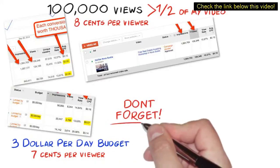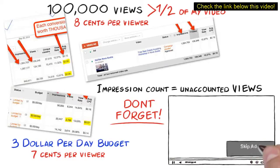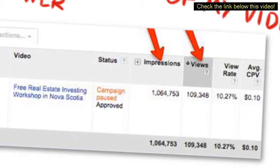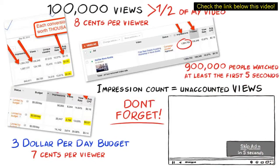Now, let's not forget that impression count is also very important, as these are unaccounted views — views for the first five seconds where the user can skip, or a little less than half of the video before they can skip the ad. These are forced views which are unaccounted. As you can see from this screenshot, it has over 100,000 paid views. But take a look at this: we have over 1 million impressions and over 100,000 views, which means 900,000-plus people watched at least five seconds or a little less than half of the video, and we paid absolutely nothing for those 900,000 unaccounted views.